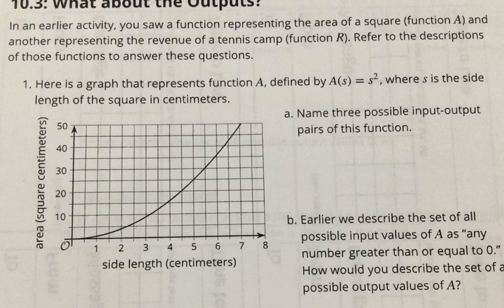Here's a graph that represents function A. We're looking at area of a square defined by A(s) = s², where s is the side length of a square in centimeters. Name three possible input-output pairs. So what are they really asking for if they're asking for an input-output pair? An ordered pair. They want three x and y's, three ordered pairs. Looking at this graph, can anybody find three ordered pairs? So 5 and 25 is definitely one.